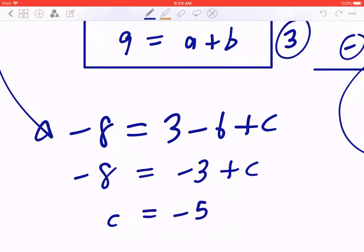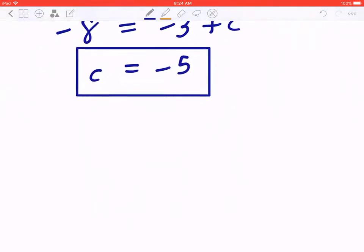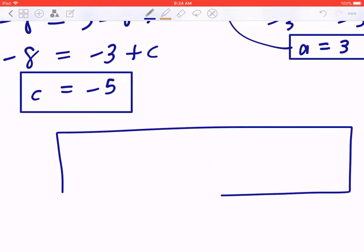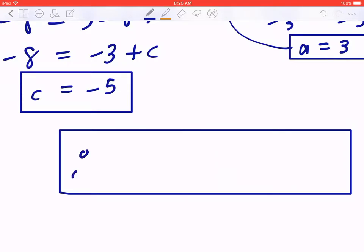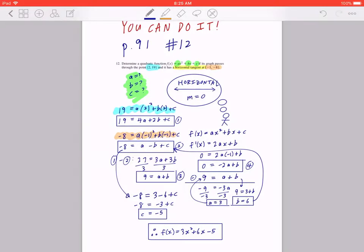Here comes the final statement. Therefore, f of x equals 3x squared plus 6x minus 5. I hope this makes sense.